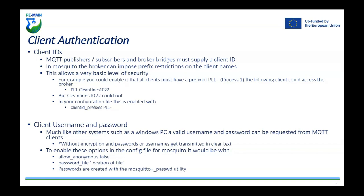A client without that prefix could not connect. In your configuration file you'd enable this with the client ID prefix set to 'PL1'. This is just a simple example showing how it can be used. It gives a basic level of authentication — it still wouldn't stop spoofing attacks, but it does provide a first layer of authentication.